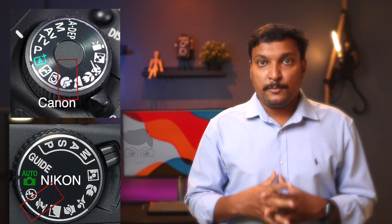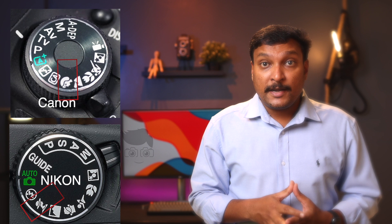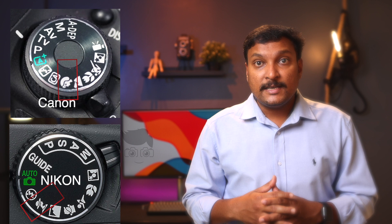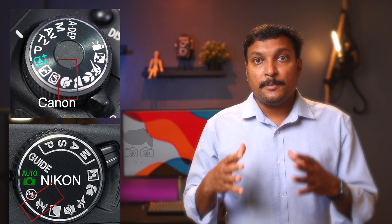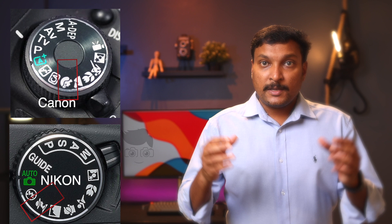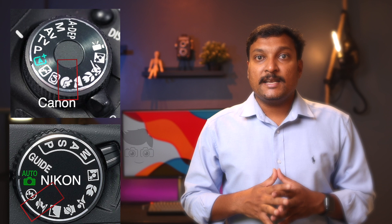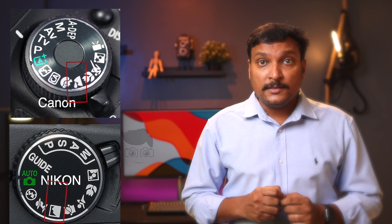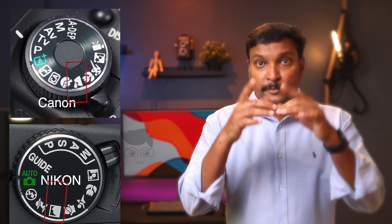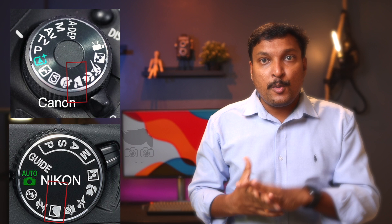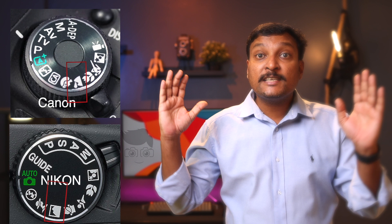This is the portrait mode, available on both Canon and Nikon cameras. In portrait mode, the background is blurred and the subject is sharp. We use portrait mode to create a nice portrait with a background blur effect.